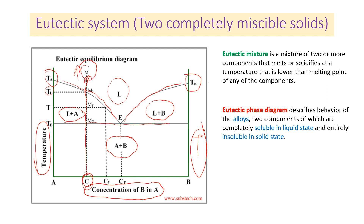We symbolize this as SM — the single liquid phase exists. Then, going down, when T reaches the value of TL, at this point we symbolize SM1 — solidification starts. In this case, the formation of primary crystals, or a solid, specifically the crystal of compound A, begins.